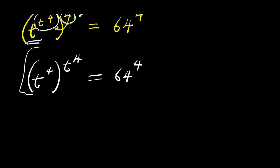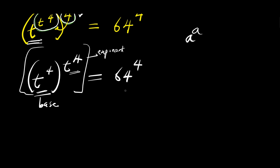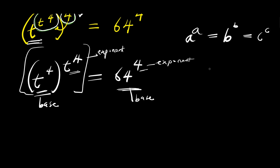Now, what happens here is that the base and the exponent on the left side are the same: t to the power of 4, t to the power of 4. This is in the form of a to the power of a. However, on the right side, the base and the exponent are different. So for us to solve this, the base and exponent on the right must also be the same — in the form of b to the power of b — so that we can equate the exponents.